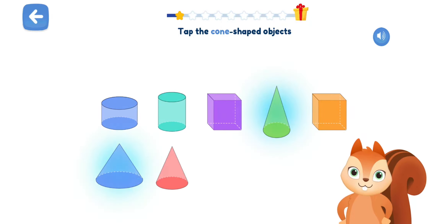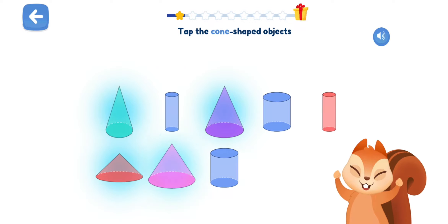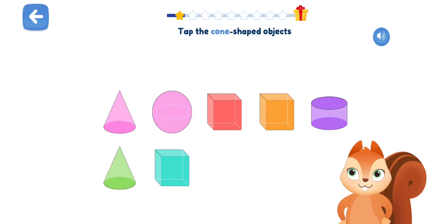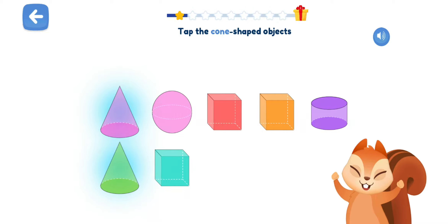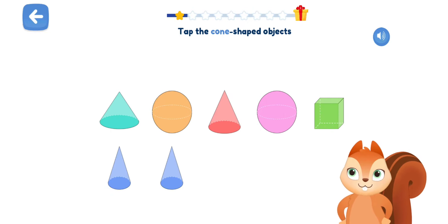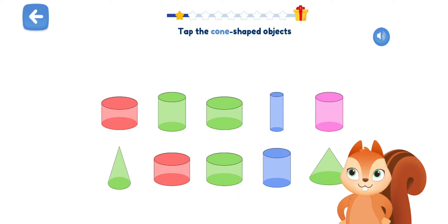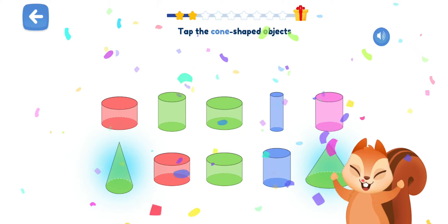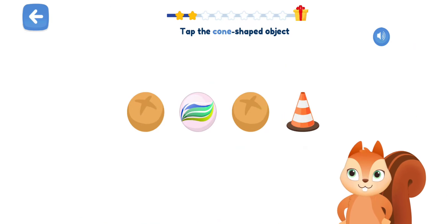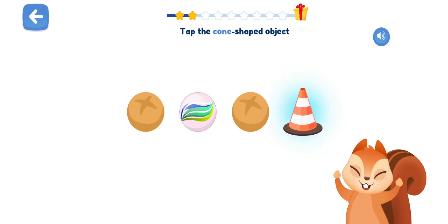Good! Tap the cone-shaped objects. Keep it up! Tap the cone-shaped objects. Cool! Tap the cone-shaped objects. Good! Tap the cone-shaped objects. Good job! Good job! Tap the cone-shaped objects. Good job! Fantastic!